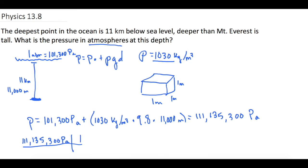So 1 atm is equal to 101,300 pascals. So now our pascals cancel, and we're left with the atmospheres. And that gives us, and we divide those two, 1097.09 atmospheres.